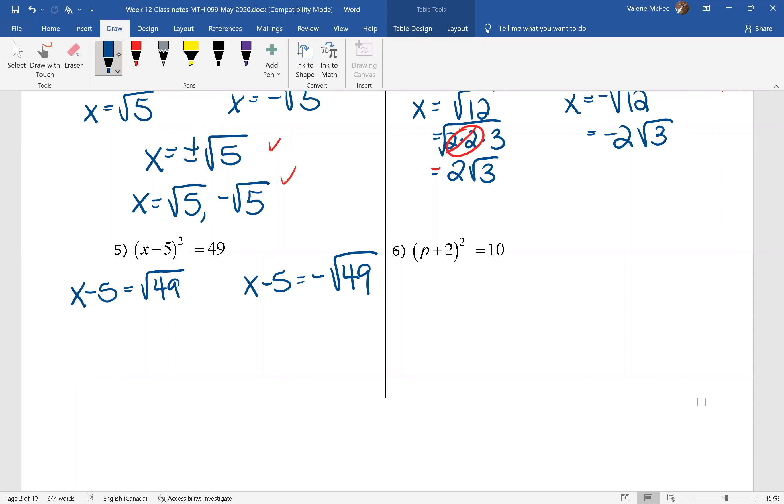Now I know the square root of 49 is 7. I can add 5 to both sides. We find that x equals 12 and negative 2. This one's a little bit different. It's not just plus or minus.